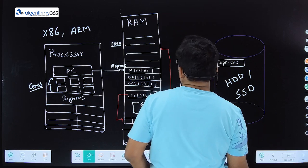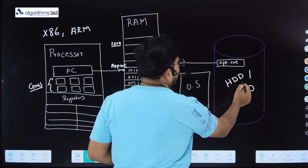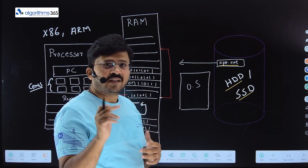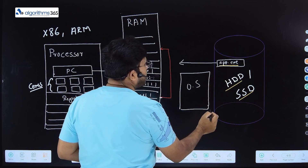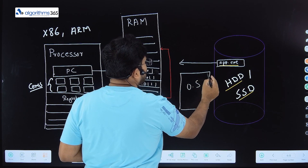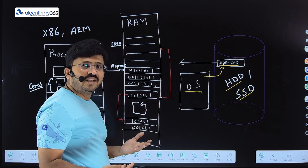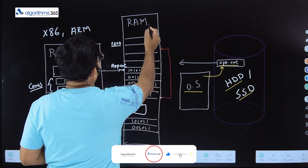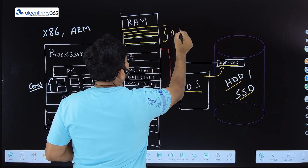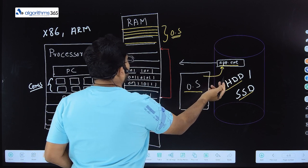Here is a diagram which explains what happens when you load an application. In a hard disk or SSD, you have an application — let's say Notepad or Paint. When you double-click on it, the application file saved permanently in the hard disk is read by the operating system and loaded onto the RAM. The operating system has a bunch of processes already loaded in the RAM, and when you start a computer or phone, the operating system is already running.